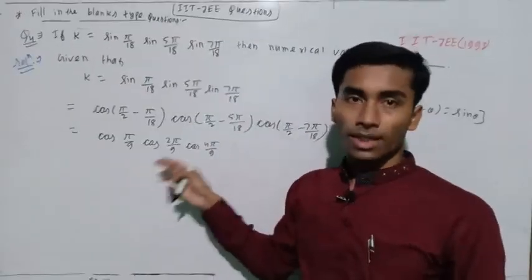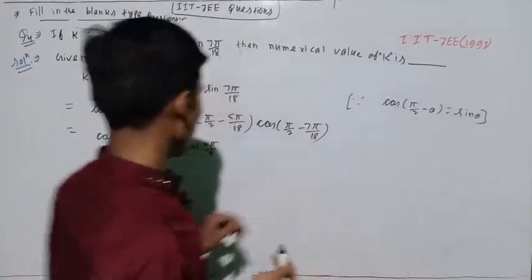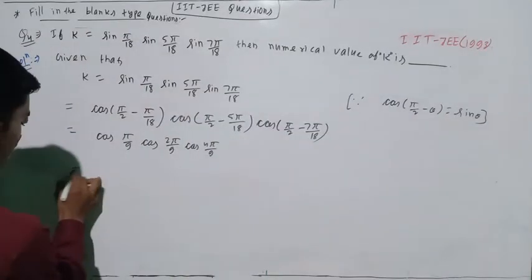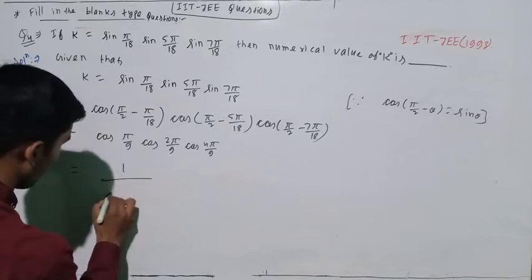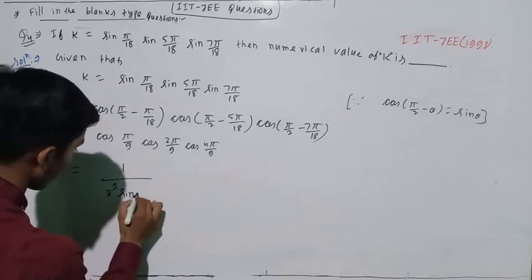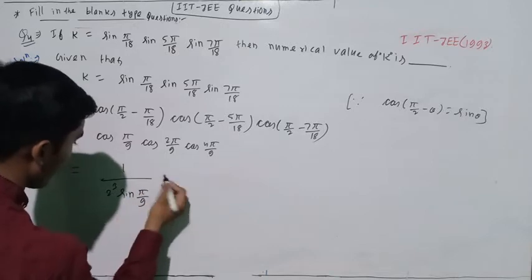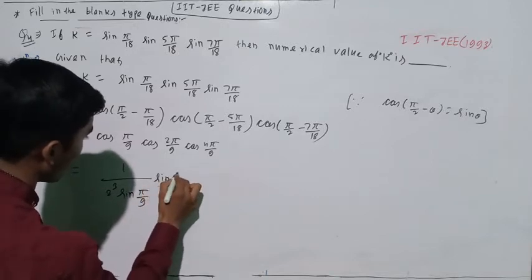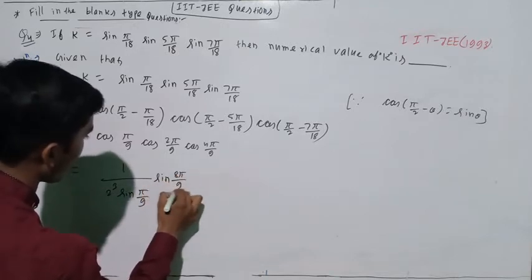Now if you apply the series formula, you will get 1 over 2 to the power 3, times sin(π/9), times sin(8π/9).